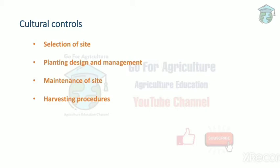Planting design and management covers how we need plants, how we grow plants, plant spacing, and time of sowing. Maintenance of site covers how we can save the crop from pest attacks — for example, soil management like tillage and irrigation. Harvesting procedure covers how to do the harvesting process.